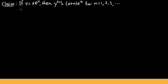In this video I'm going to show you how to prove that if y is equal to x times e to the x, then the nth derivative of y is equal to (x plus n) times e to the x, for n equal to 1, 2, 3, 4, 5, and so on.